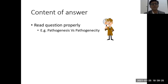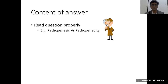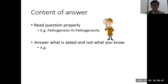Marks are directly proportional to the content of the answer and the writing skills. The first aspect for content is: read the question properly. We are always in a hurry and hardly read the whole question. A common mistake is confusing pathogenesis and pathogenicity — we hurriedly write about pathogenicity but the question asked is about pathogenesis.